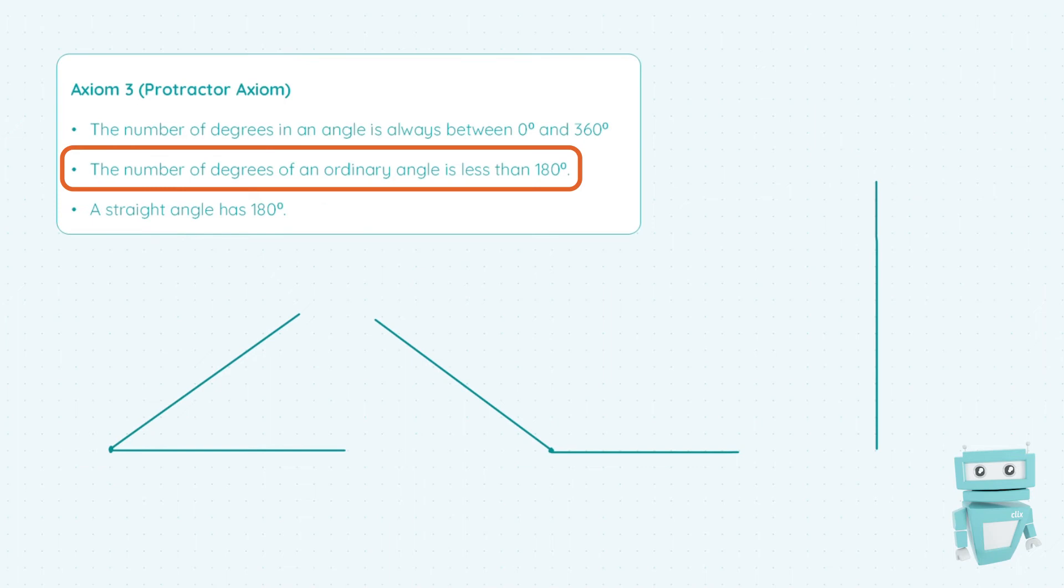Point two states that the number of degrees of an ordinary angle is less than 180 degrees. Over here in the middle we have this ordinary angle. The reason this definition is useful is because in a triangle there's always 180 degrees total, so any angle you can see in any triangle is going to be less than 180 because the total sum of every angle in the triangle adds up to 180 exactly.